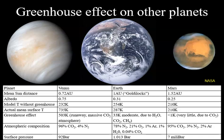Venus is permanently shrouded in clouds, and hence, has a very high albedo. In fact, if it weren't for its extreme greenhouse effect, its surface would be colder than that of Earth.